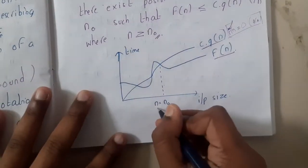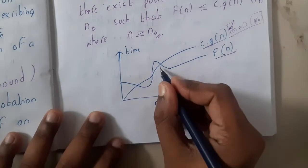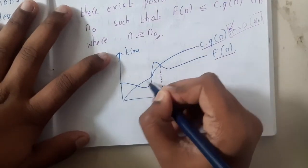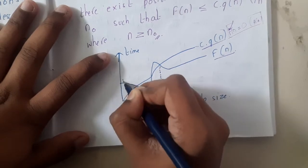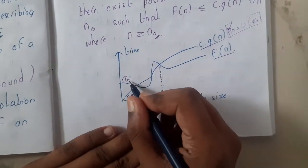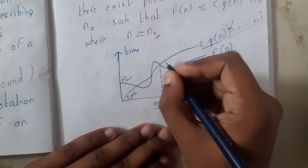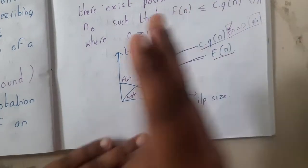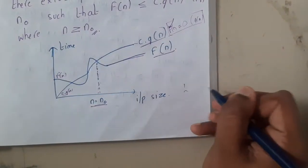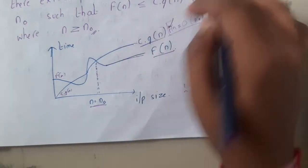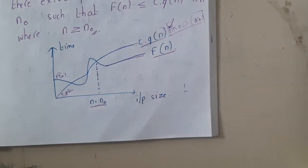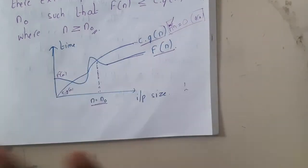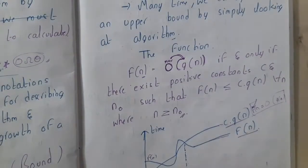What is n₀? At some point, before n₀ the ordering may differ, but after n₀, f(n) is always below c·g(n). Initially c·g(n) might be less than f(n), but after a particular point f(n) is always below c·g(n). That crossing point is n₀, and for all n ≥ n₀, c·g(n) is above f(n).